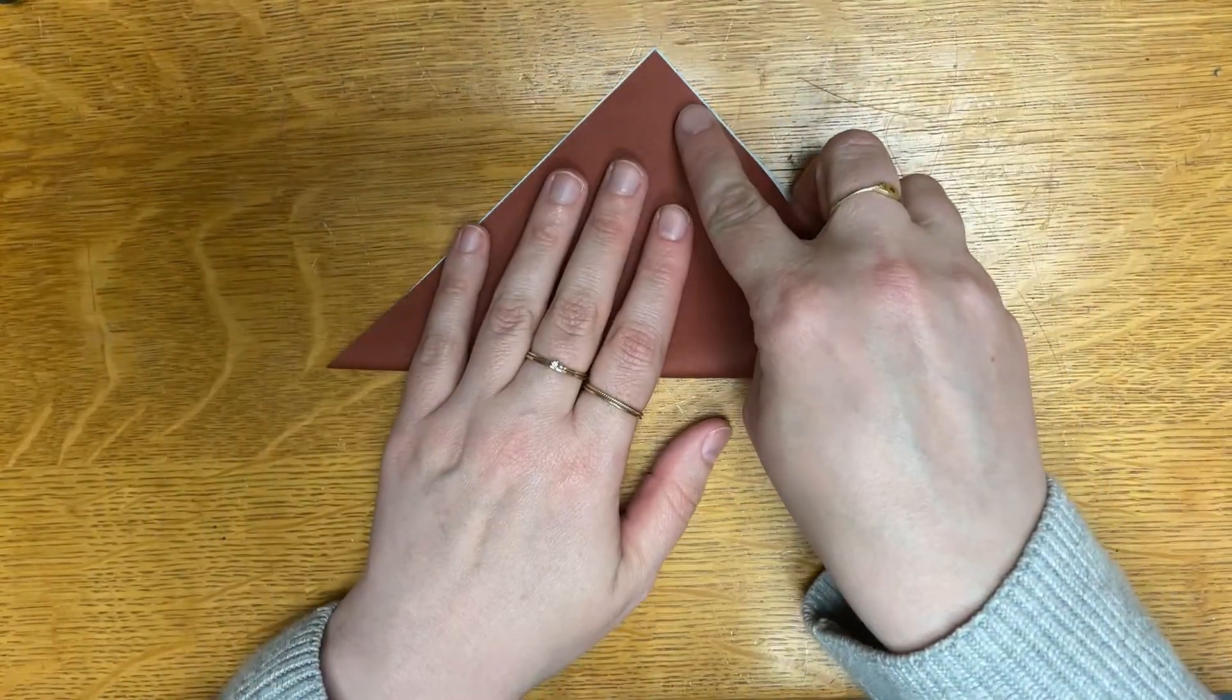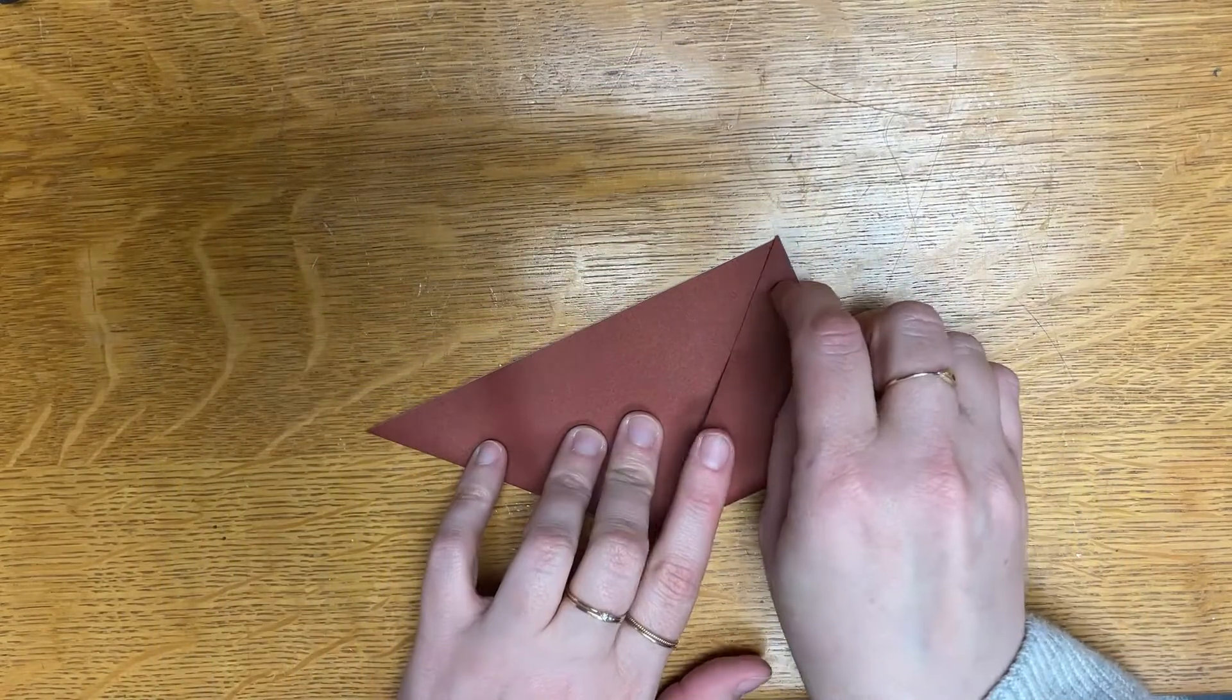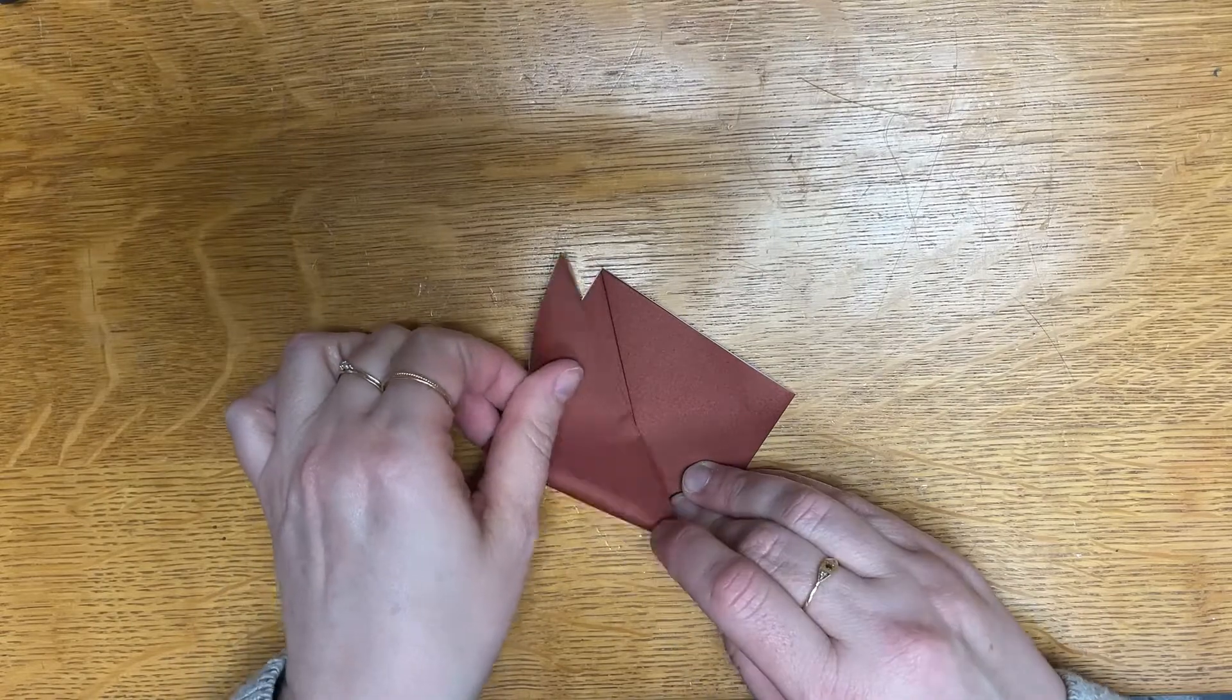Hey everybody, we're making a reindeer, or regular deer if you're not feeling festive, corner bookmark. To make a corner bookmark, which we've done before, you're going to want to fold your paper in half diagonally.